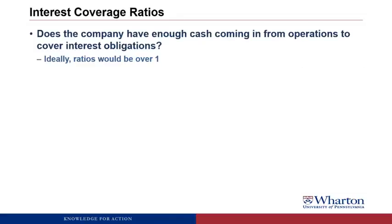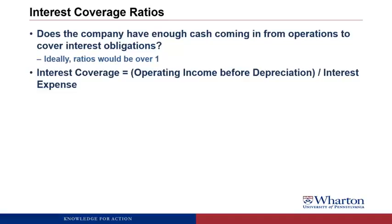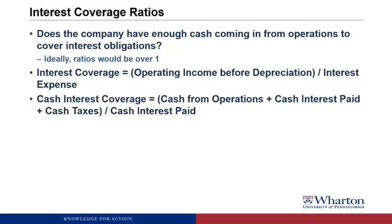Next we look at interest coverage ratios. The question here is: does the company have enough cash coming in to cover its interest obligations? Ideally the ratio is over one. The interest coverage ratio is operating income before depreciation divided by interest expense — from an accrual perspective, take sales revenue, subtract cost of goods sold and SG&A, add back depreciation since it's non-cash, and check if that covers interest expense. We can also do this on a cash basis: cash from operations plus interest and taxes, to see if that covers the cash interest paid during the period.